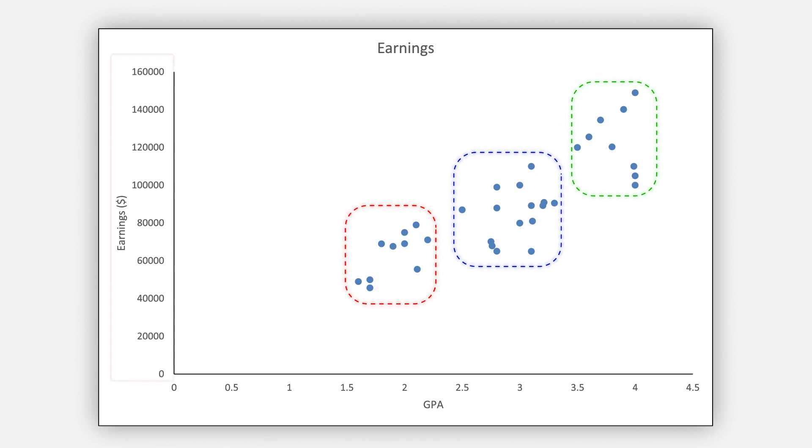You can also see salary for this group on the y-axis. It shows the group with the highest GPA of 4 has the highest income and the group with the lowest GPA in school has the lowest income. You can also draw the line as shown here and predict earnings based on specific GPA.